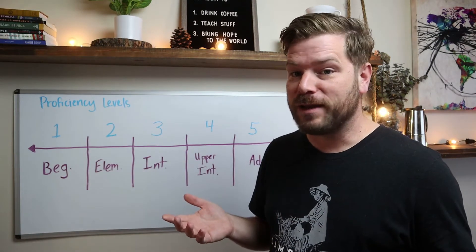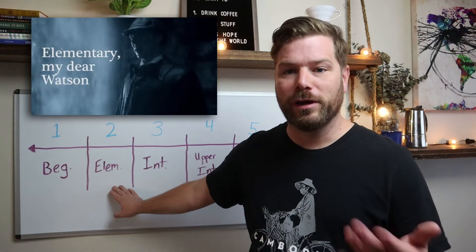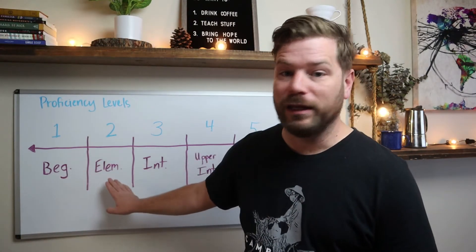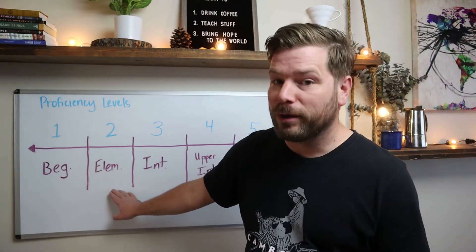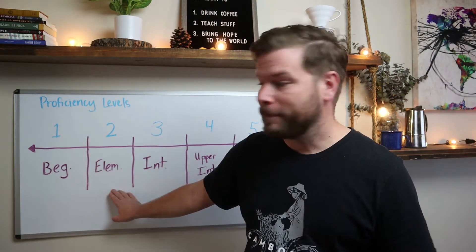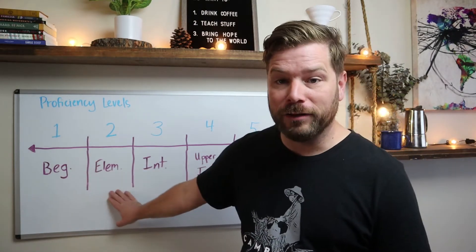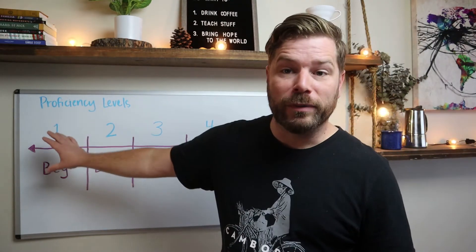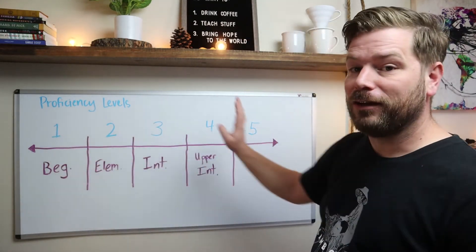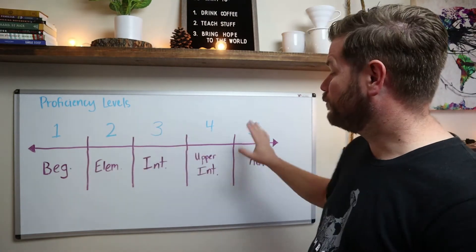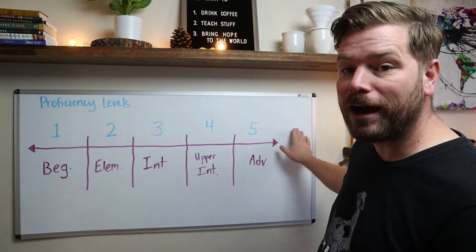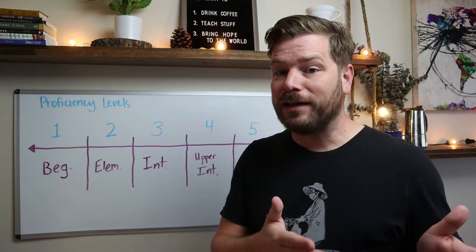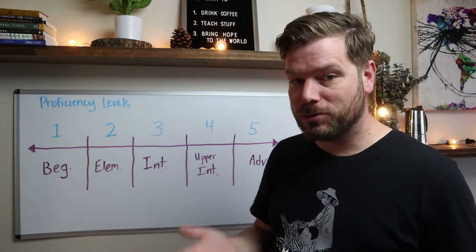Some schools may not use the term elementary the way we do in TESOL. They may have a beginner one and beginner two course, or an upper beginner. Or they may have a lower intermediate, an intermediate, and an upper intermediate. Or they might place all levels on a numbered scale — level one, two, three, four, and five. There are many different ways schools can name their classes and levels.